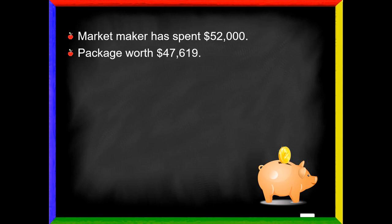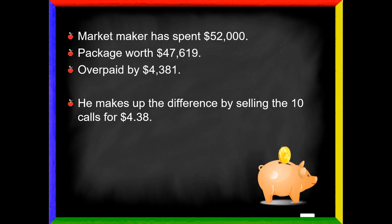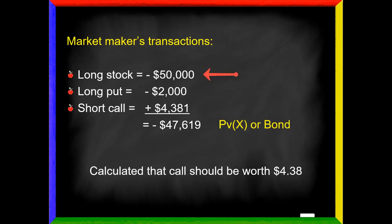This three-sided position, this conversion, acts like a discount bond or T-bill or bank CD. We're going to pay one price and we're guaranteed to get a bigger price in the future. If the market maker has spent $52,000 but the entire package is worth only $47,619, what does that tell you? He is overpaid by the difference of $4,381. That's not a good deal. So he needs to make up this difference by selling those 10 calls to you for $4.38. If he does so, it's going to bring in $4,380 roughly in cash. He spent $50,000 for the stock, $2,000 for the put, and receives $4,381 from those short calls, which means his total cash outlay is $47,619, exactly what it should be.